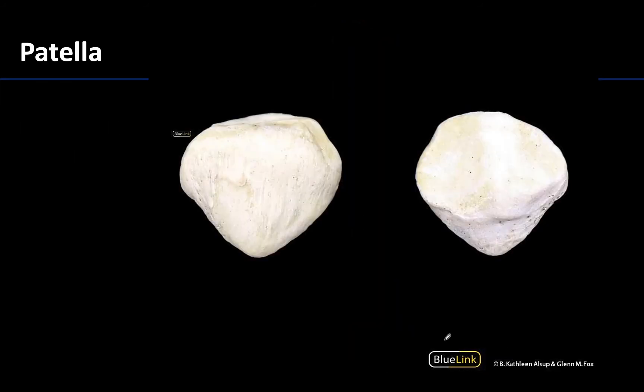The patella is the largest sesamoid bone in the body. A sesamoid bone forms within a tendon, and the patella forms in the tendon of the quadriceps femoris muscle in the anterior thigh. It is the bone you feel when touching the anterior portion of your knee. It has a rougher anterior side and a smoother articular posterior side, which is the side that articulates with the femur.